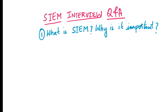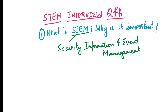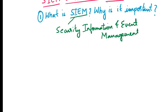The first question is: what is SIEM and why is it important for an organization's security posture? SIEM stands for Security Information and Event Management. It is a comprehensive approach to security management that combines SIM — Security Information Management — and SEM — Security Event Management — into a single solution. SIEM systems provide real-time analysis of security alerts generated by various hardware and software systems in an organization's network.